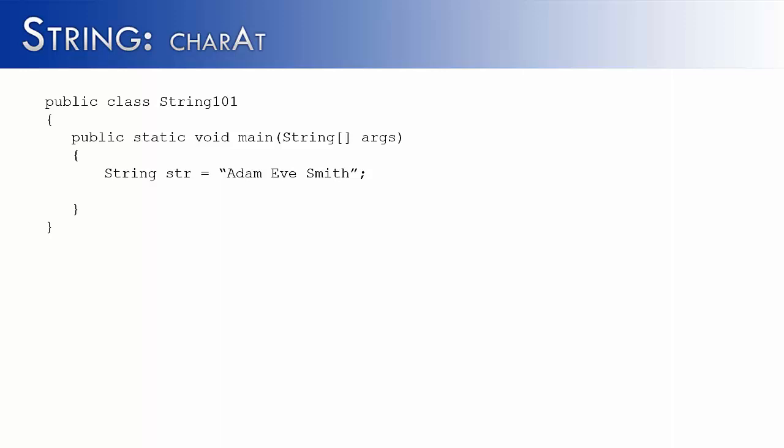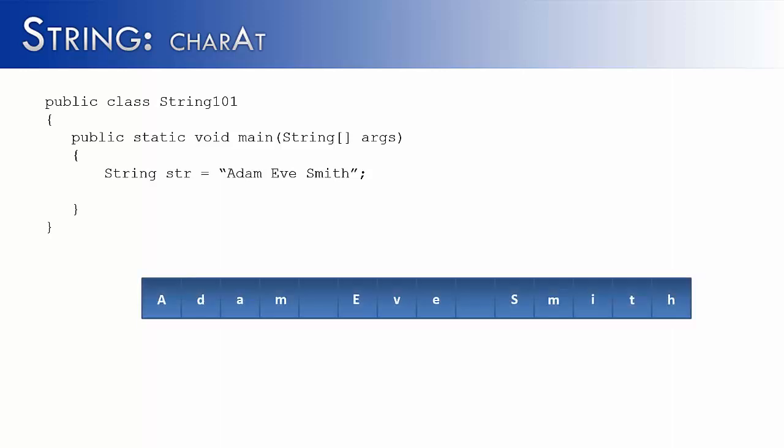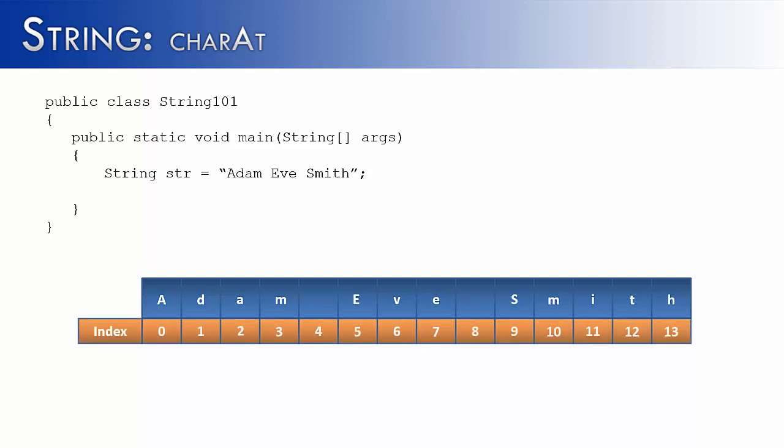Strings in general can be divided into their individual characters. And so here's a visualization of that. So we have Adam Eve Smith. It's kind of like a row of cabinets all next to one another, and each cabinet holds a character value. And if I want to pull out individual items from a cabinet, I would have to reference it by something called its index. And the index is going to start at zero and go to however many values you have inside of your string.